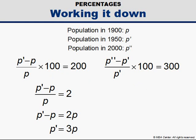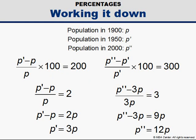Now that we have P' in terms of P, we can substitute 3P for P' in our second equation. Then we solve for P'', the population in 2000, in terms of P. It turns out the population in 2000 was 12 times the population in 1900.